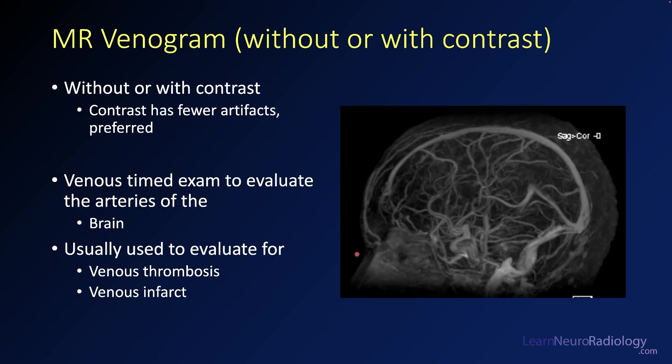An MR venogram, just like a CT venogram, is set up to see the veins. It can be done without or with contrast, though we tend to use contrast because it has fewer artifacts. It's used to evaluate for venous thrombosis or venous infarct.